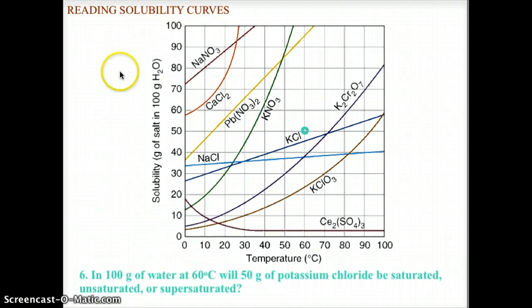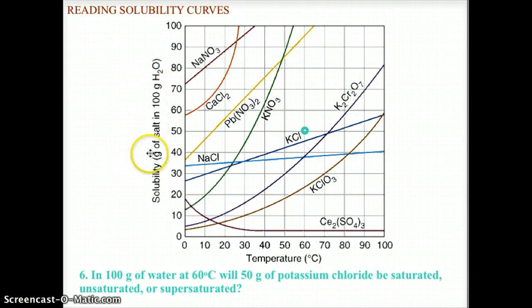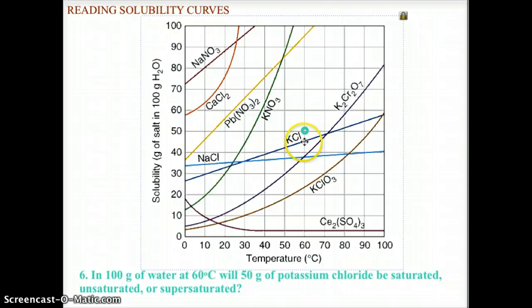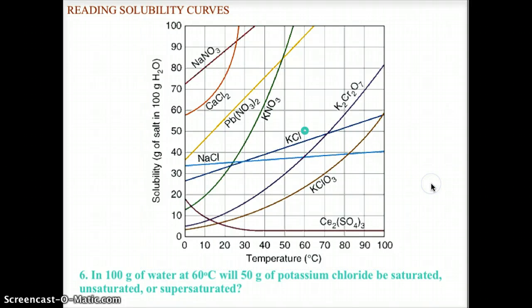One more: in 100 grams of water at 60 degrees Celsius with 50 grams of potassium chloride — would the solution be saturated, unsaturated, or supersaturated? At 60 degrees Celsius, the point at 50 grams falls above the KCl line. Since it is above the line, there is too much solute, making this a supersaturated solution. To be saturated, you would need approximately 45 grams of solute.